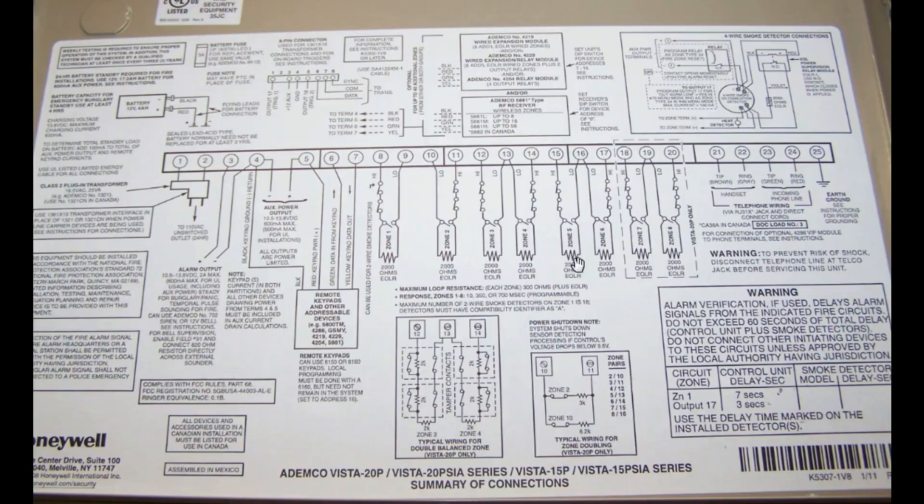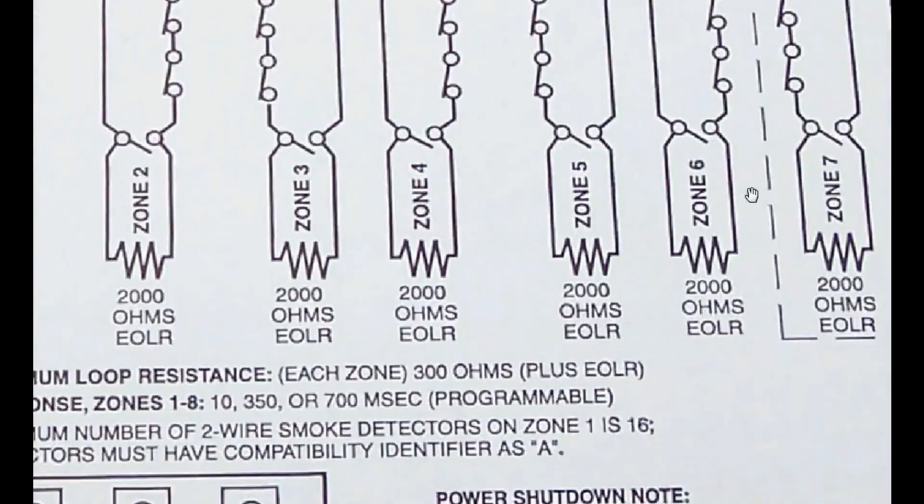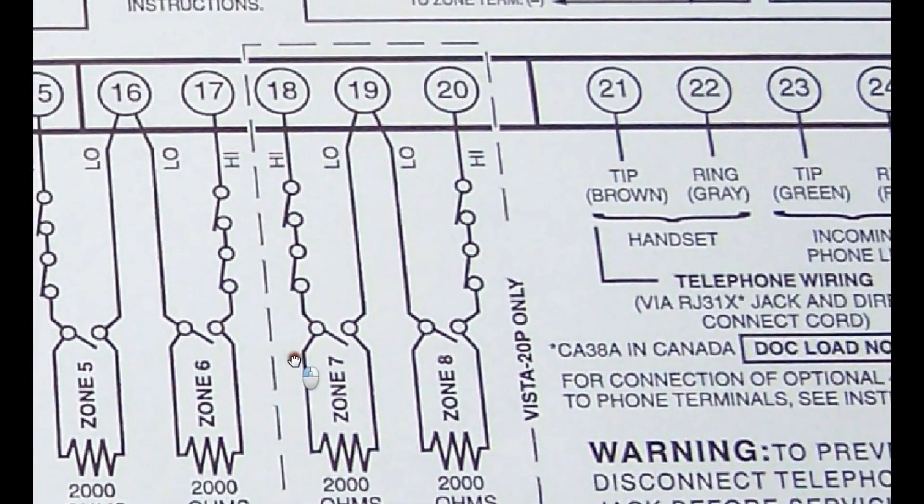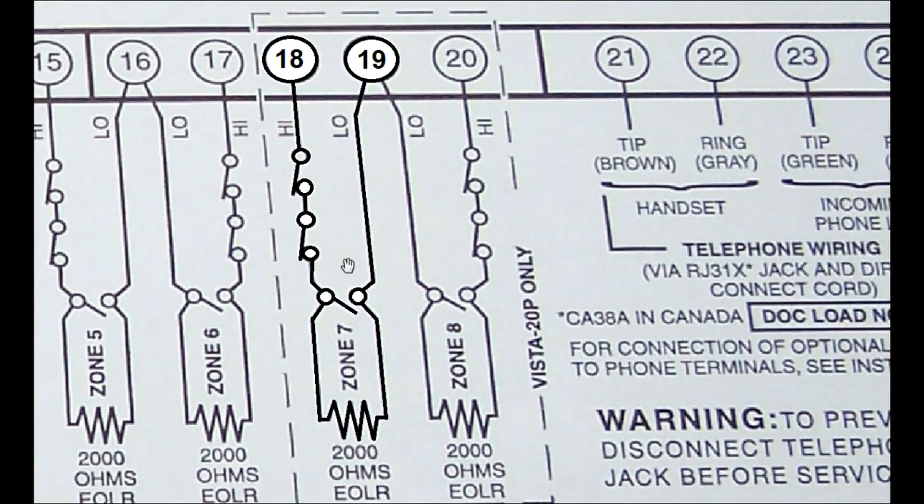In this video, I'd like to take a look at how to read that schematic that's mounted inside the door of your VISTA 20P panel. In this example, let's say we're going to add a sensor to zone number 7.